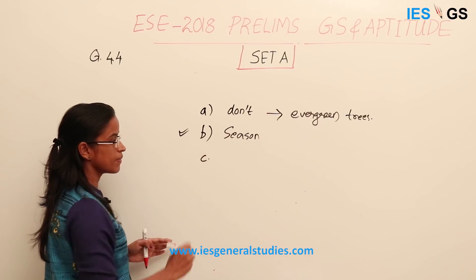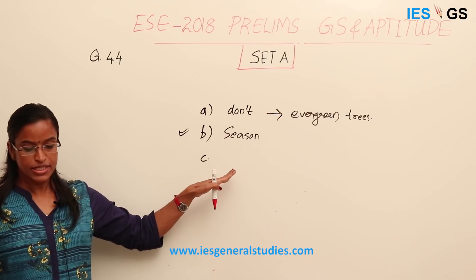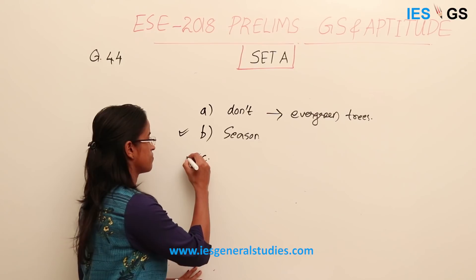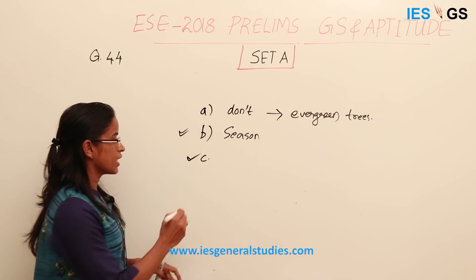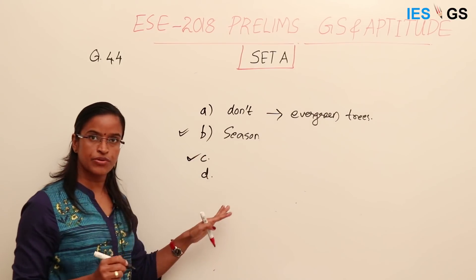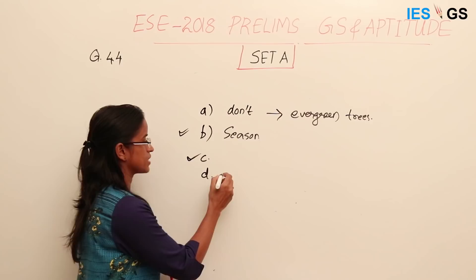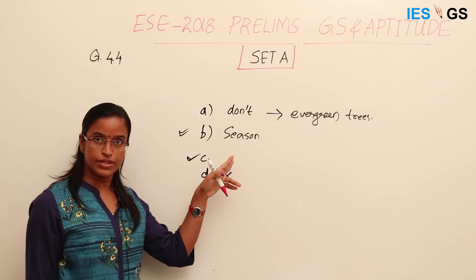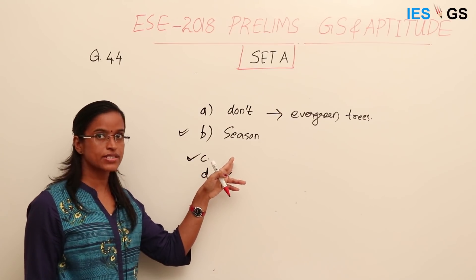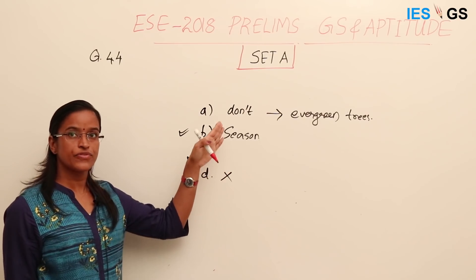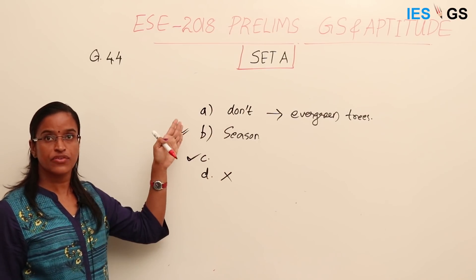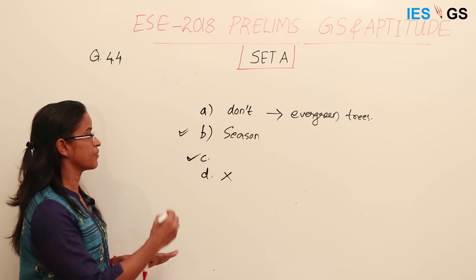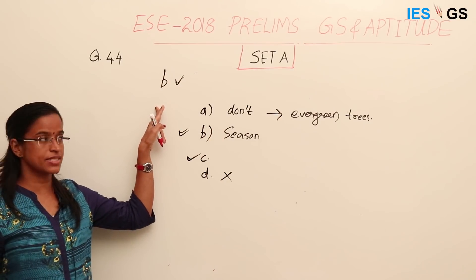Option C states that they are photosynthetic, which is also correct. Option D says they depend on others for food — that is not correct. But all trees are photosynthetic, so if you are asked to define the characteristic specific to deciduous trees, we go with option B. Option B is the answer.